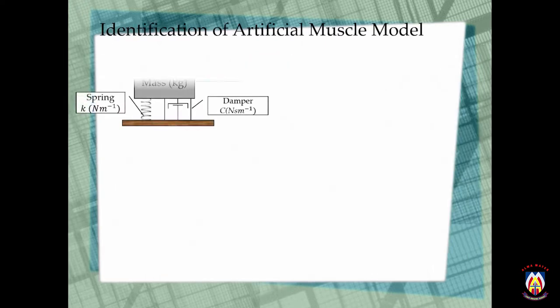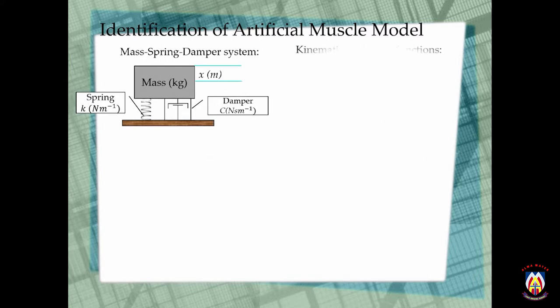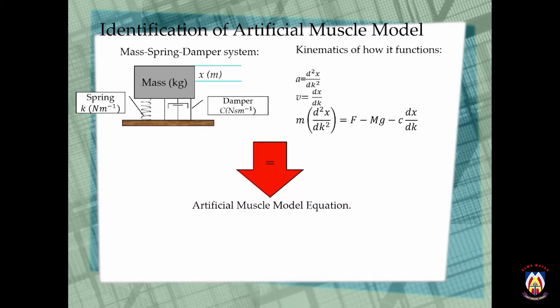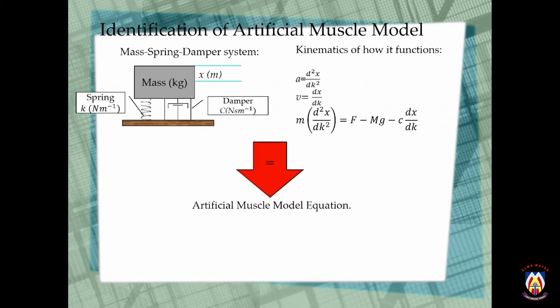So how to obtain the artificial muscle model? We use the ideology of a mass spring damper system and the kinematics of health functions. And by combining those two, we can finally formulate the artificial muscle model equation.